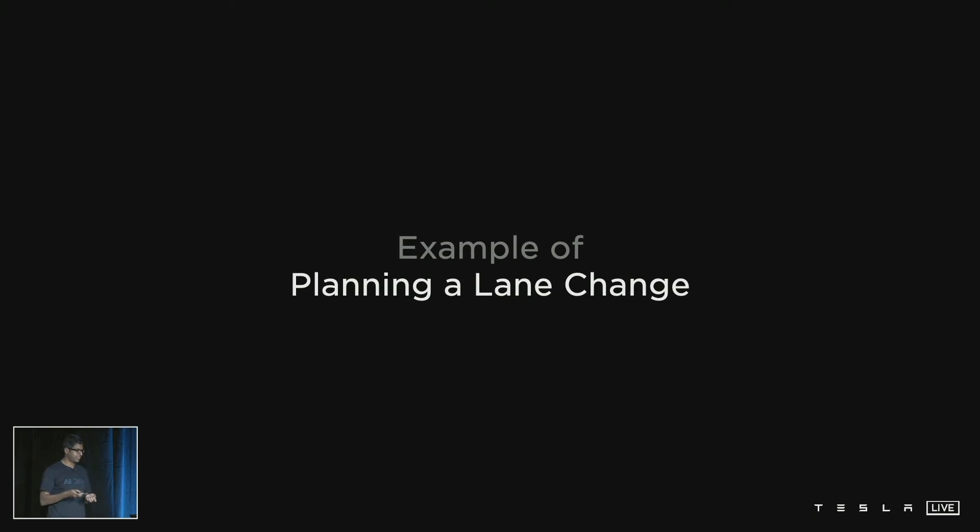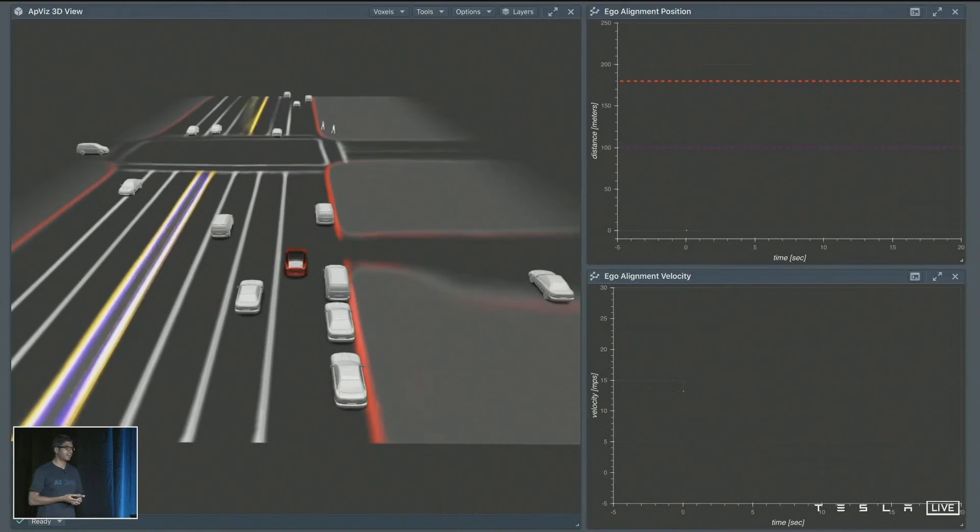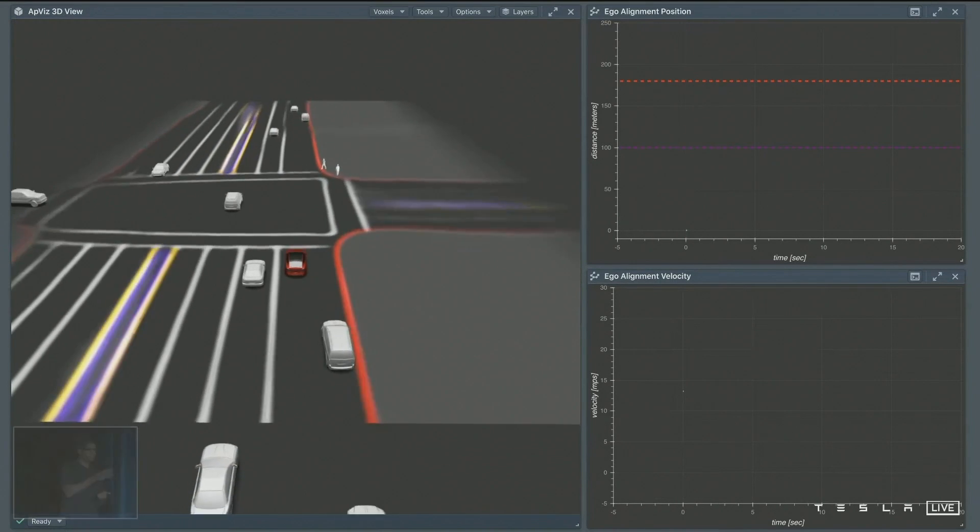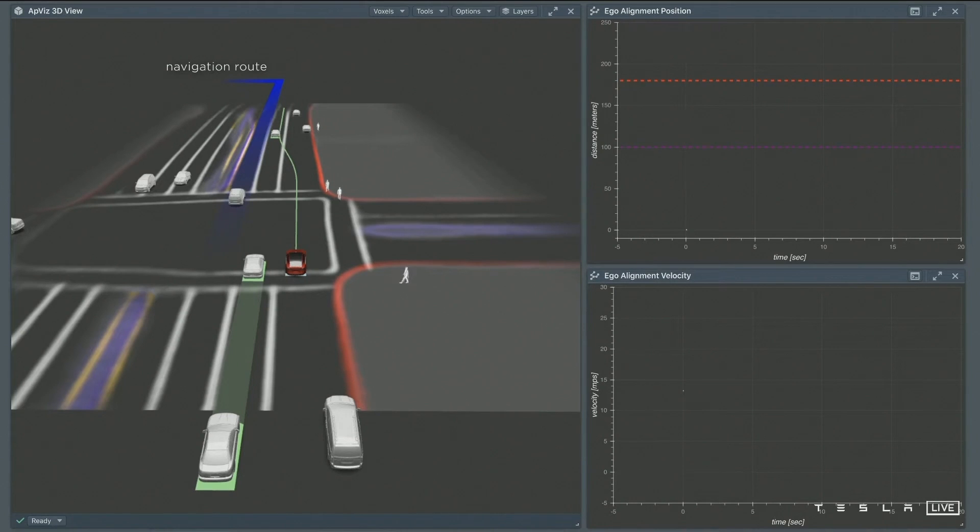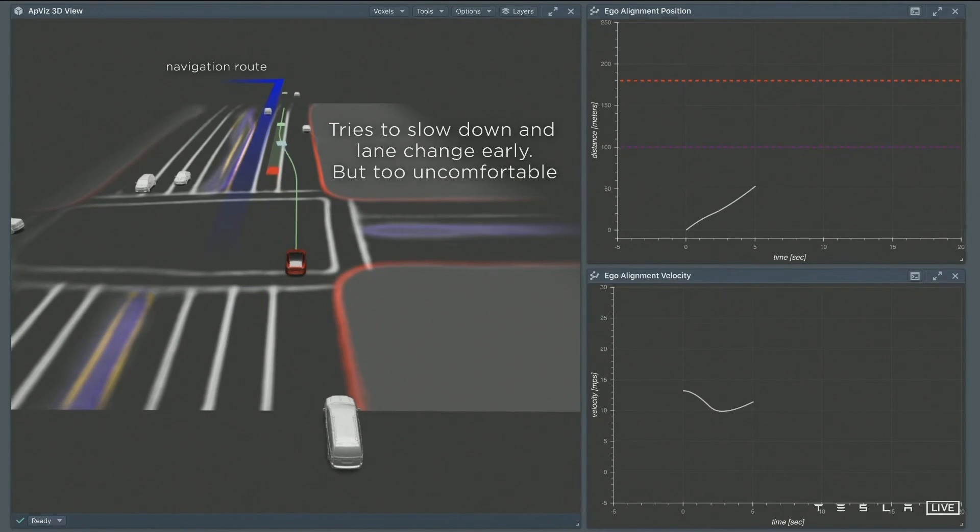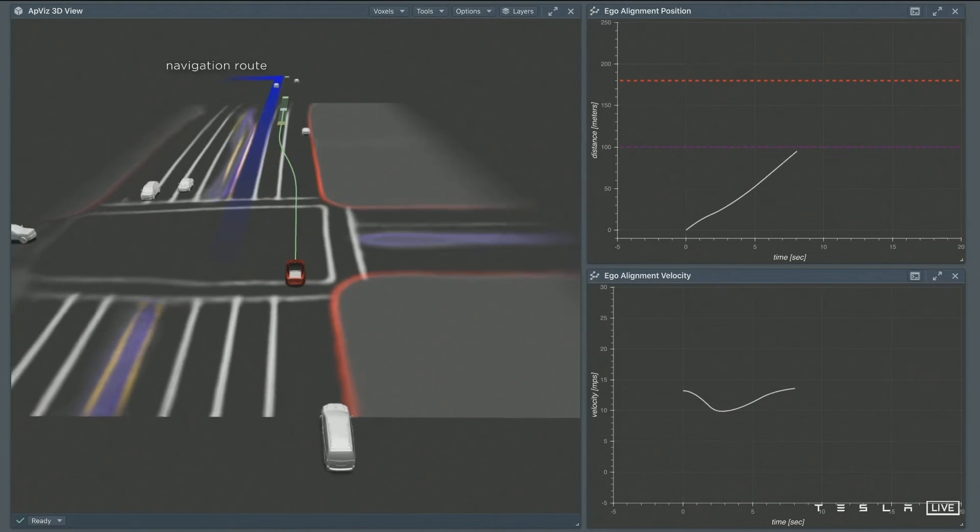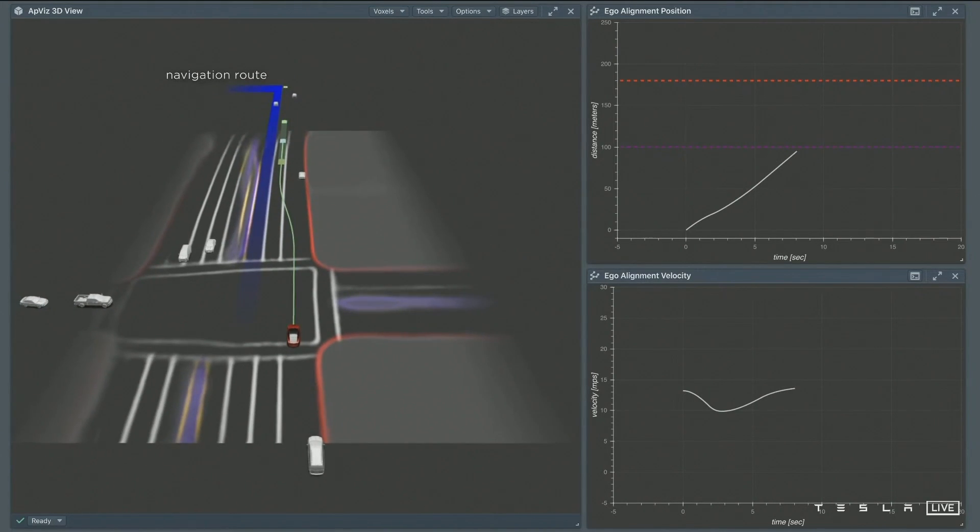Here we're trying to do a lane change. In this case the car needs to do two back-to-back lane changes to make the left turn up ahead. For this the car searches over different maneuvers. The first one it searches is a lane change that's close by, but the car brakes pretty harshly so it's pretty uncomfortable.